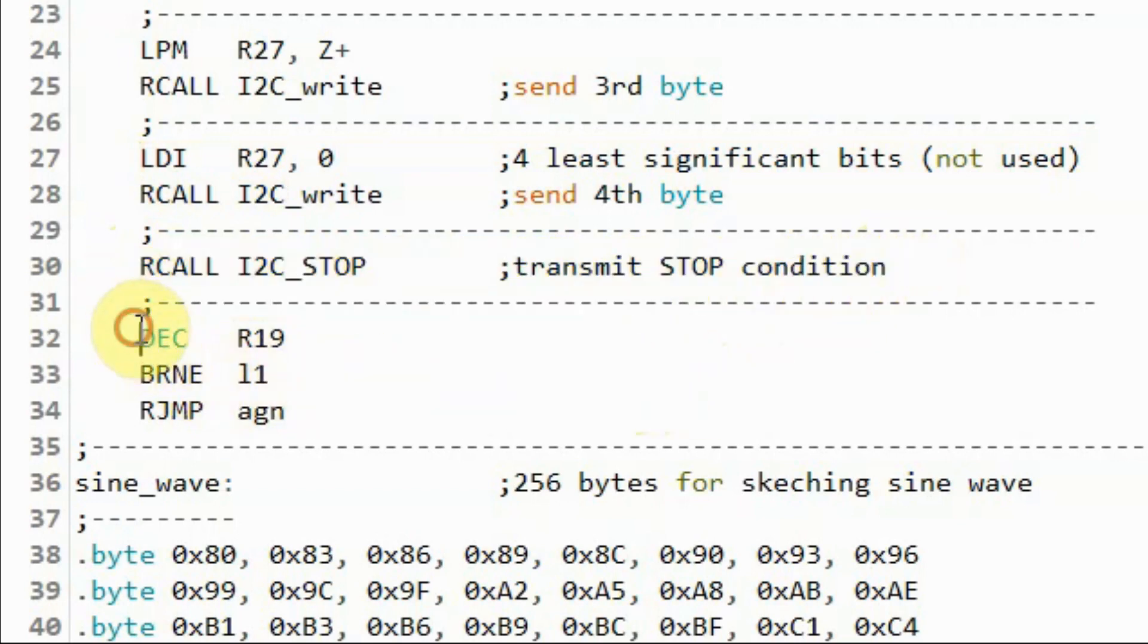And then we decrement the counter R19. And we loop back and continue with the process to get the next byte. And continue getting all of the bytes stored in memory. And then the whole process is repeated. And we have a continuous generation of the sinusoid on the scope.